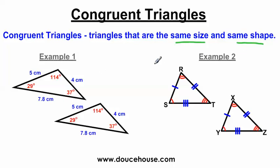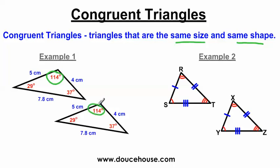I've got two different examples of two sets of congruent triangles. In the first one, I indicated that sides were congruent to each other by using a ruler, and that angles were congruent to each other using a protractor. All these sides and angles have a matching corresponding angle — for example, 114 degrees has a matching pair, and 4 centimeters matches 4 centimeters all the way around.